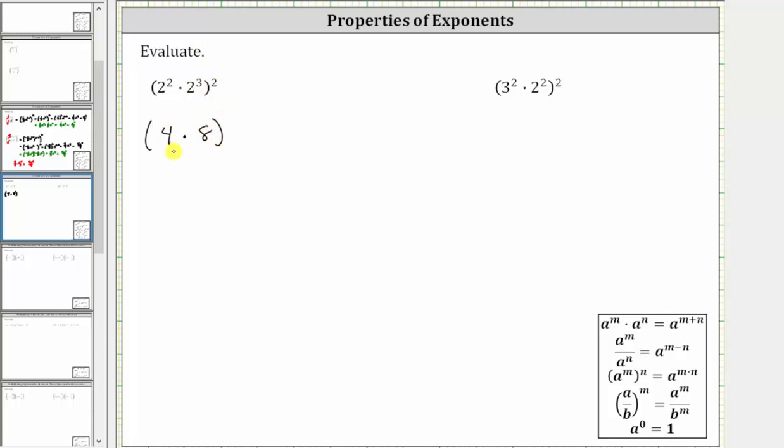So we have the product of four and eight squared, raised to the second power. Still simplifying inside the parentheses, four times eight is equal to 32, giving us the square of 32.